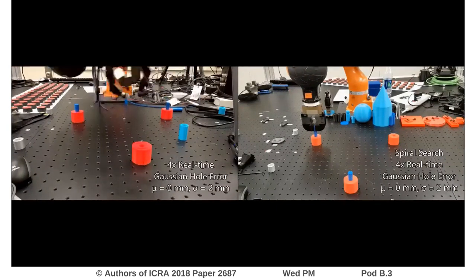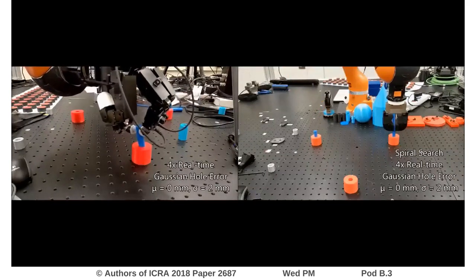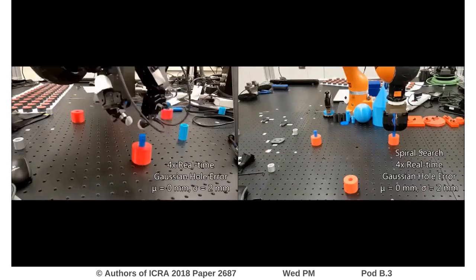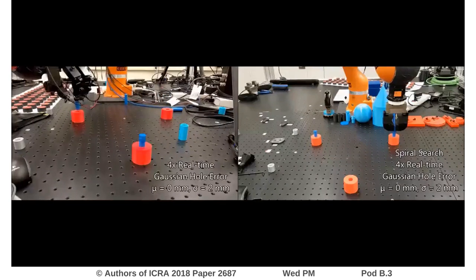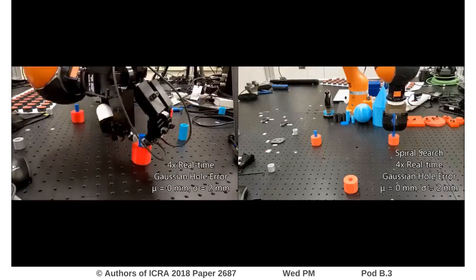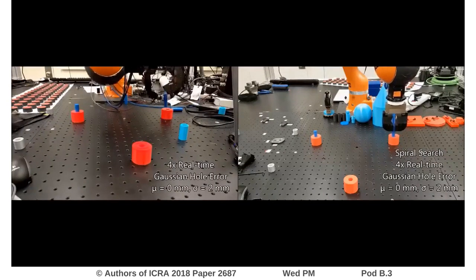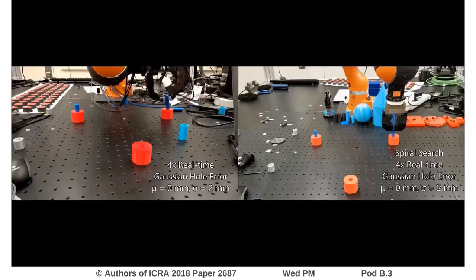The insertion strategy for the system on the right involves engaging a planar search routine that slides the peg across the surface surrounding the hole. In parallel, the arm ensures a constant contact force between the peg and the surface. By chance, the peg and the hole will eventually align, and the downward force will ensure a drop of the peg into the hole.